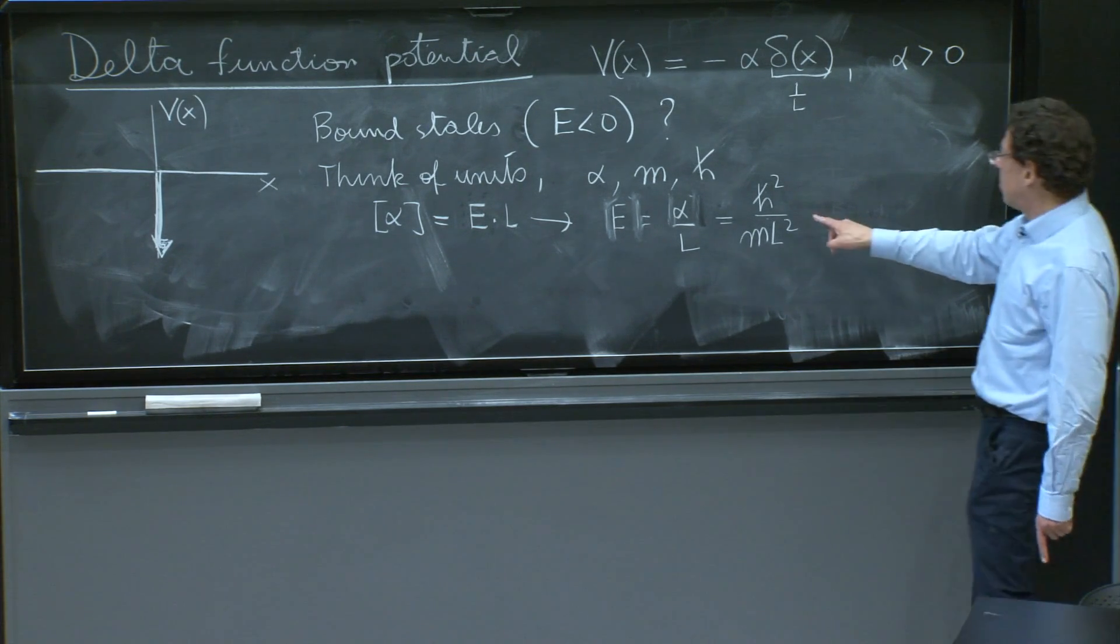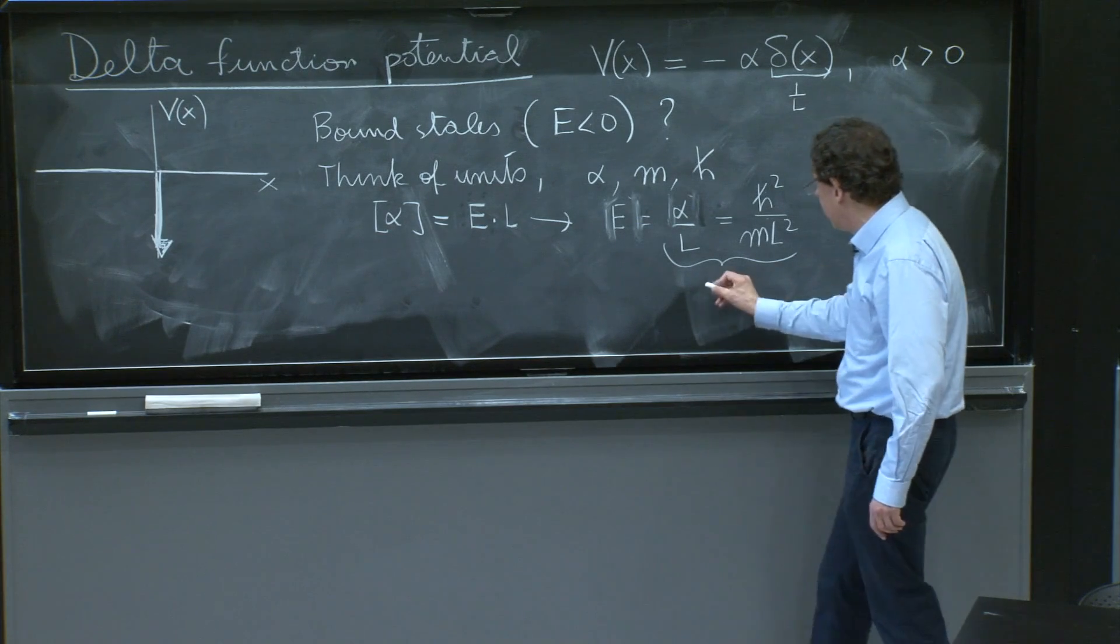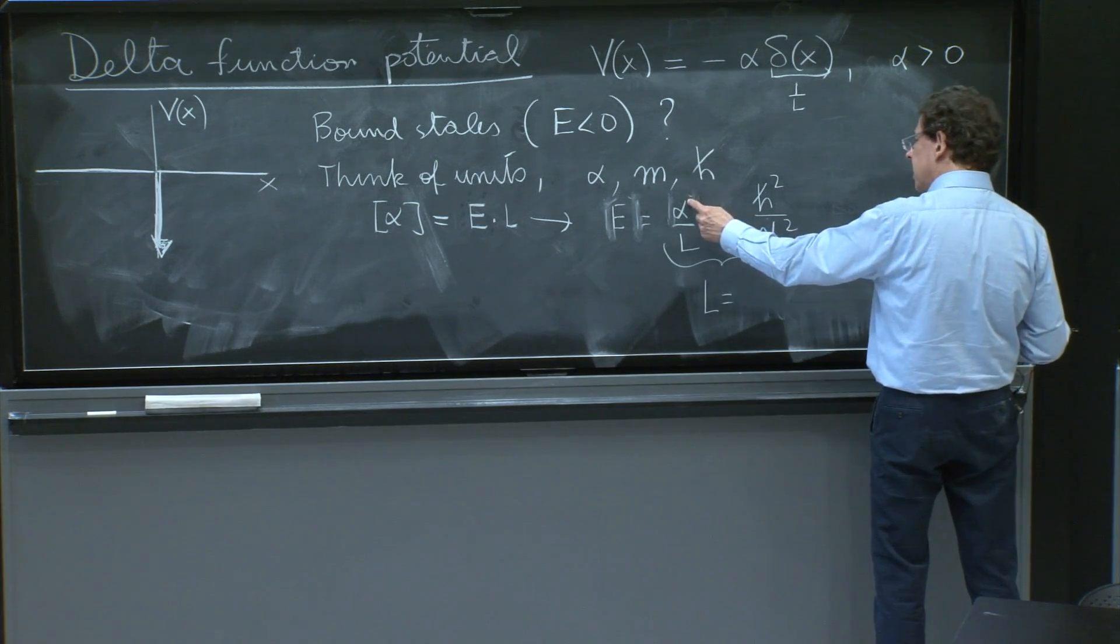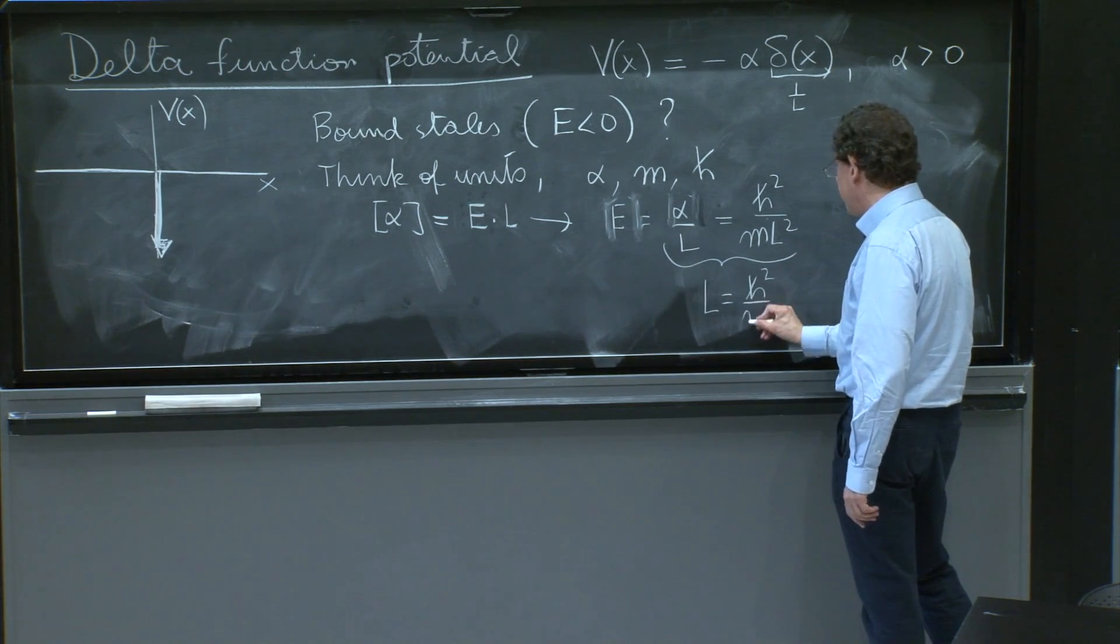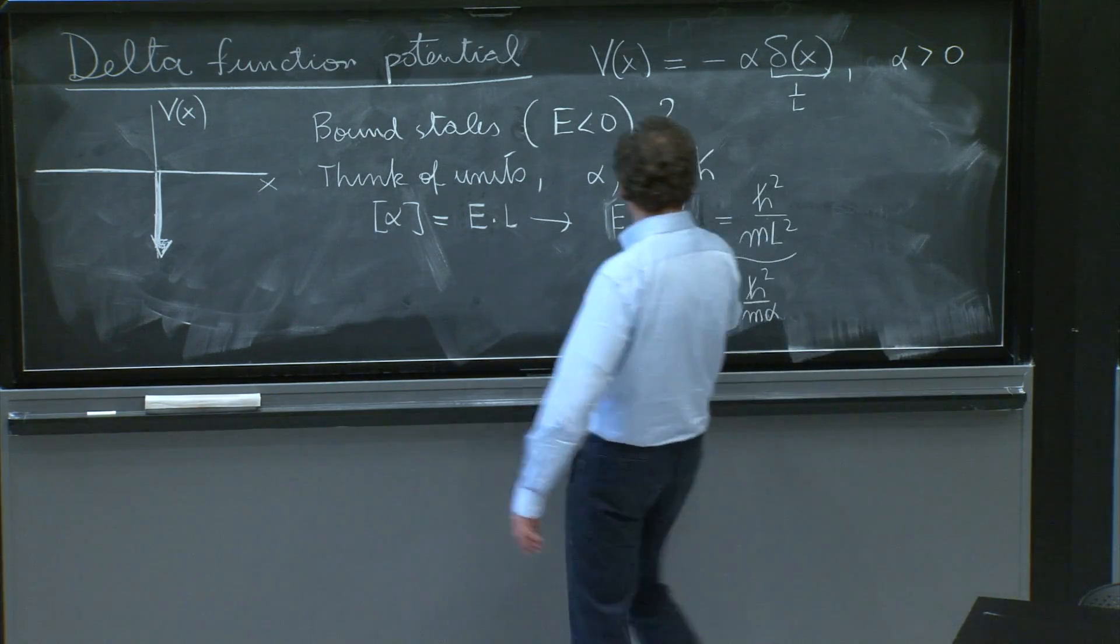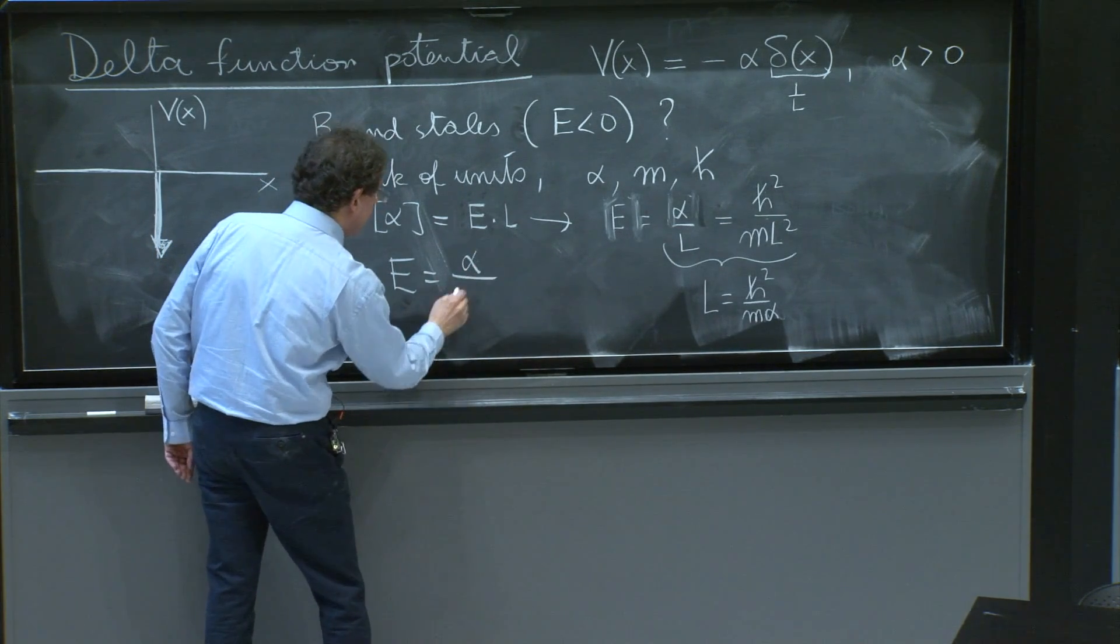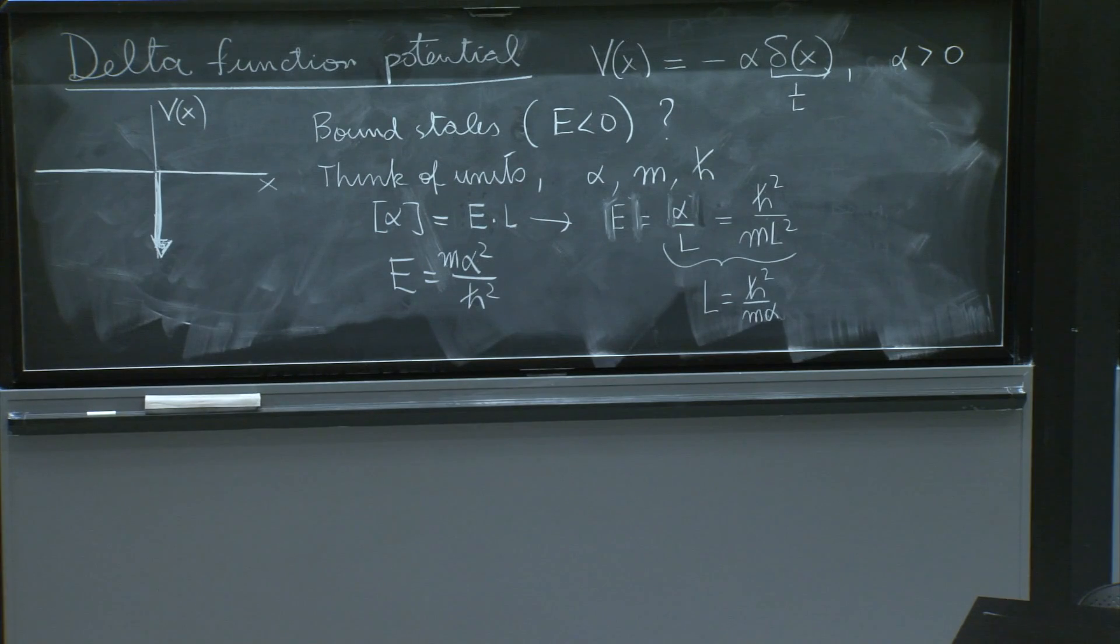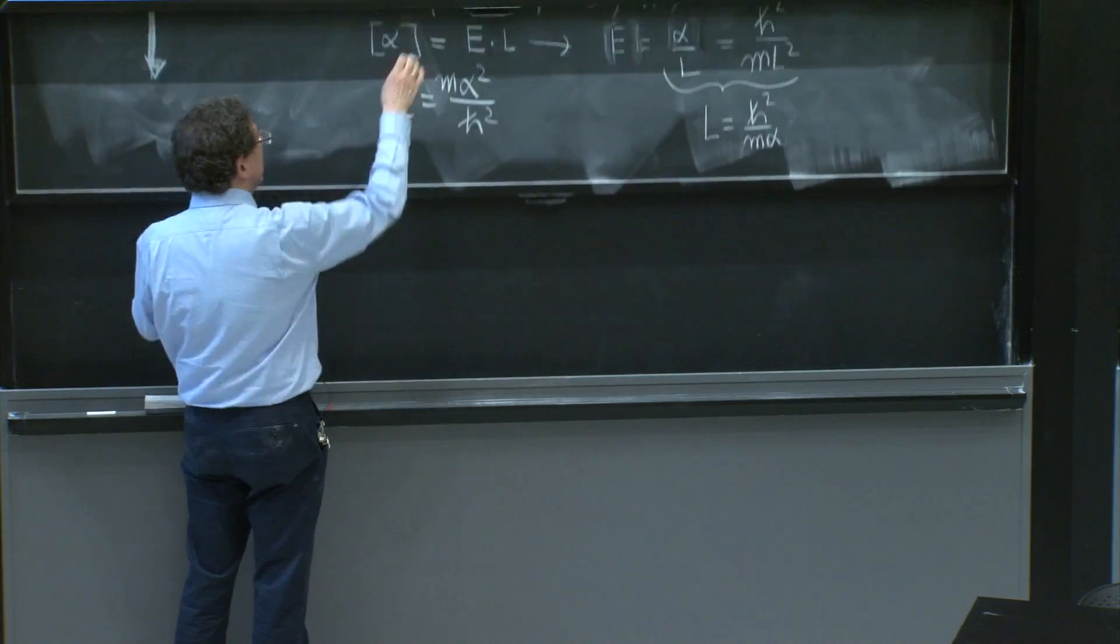From these two you can get what has units of length. You pass the l to this side, the l² to the left-hand side. Divide so you get l = ℏ² / (mα). And if I substitute back into this l here, E would be α/l, which is mα²/ℏ². So that's the quantity that has units of energy. mα²/ℏ² has units of energy.